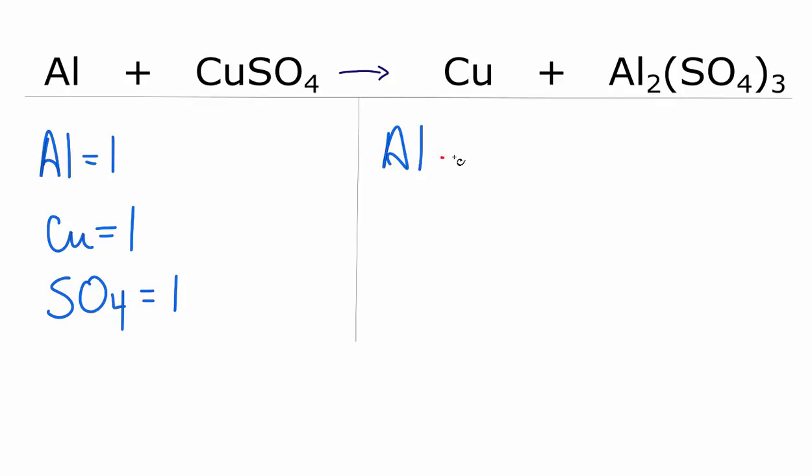Over on the products, aluminum, there are two, and copper, there's one, and then for that SO4, this three here applies to everything in the parentheses, so we have three SO4s.